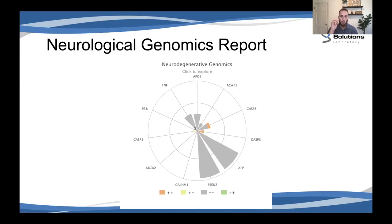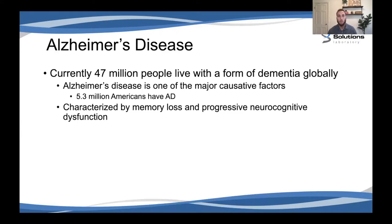We'll talk about the most important genes today in relation to Alzheimer's disease, and these can also be applied to other neurological concerns. I'll also touch on a couple of genes I've been researching that aren't necessarily included in the report but can be added separately within Opus 23 Explorer. To give a brief overview of Alzheimer's disease: currently 47 million people live with a form of dementia globally, and Alzheimer's disease is one of the most major causative factors of that dementia. 5.3 million Americans have been diagnosed with Alzheimer's disease, characterized by memory loss and progressive neurocognitive dysfunction.